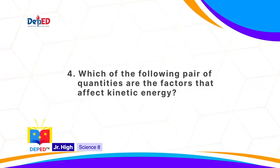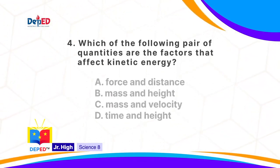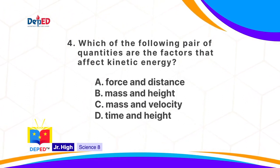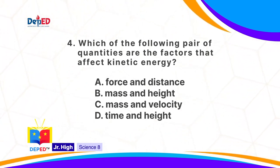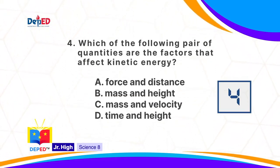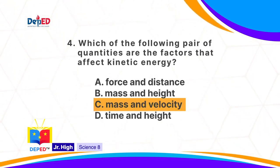Which of the following pair of quantities are the factors that affect kinetic energy? A. Force and distance. B. Mass and height. C. Mass and velocity. Or D. Time and height. The correct answer is C: mass and velocity.